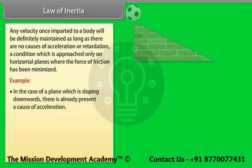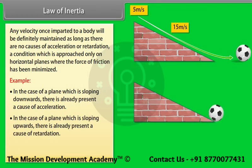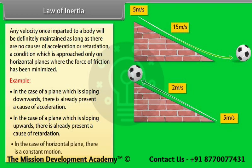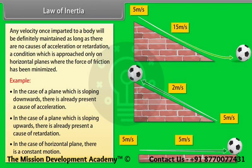In the case of a plane sloping downwards, there is already present a cause of acceleration. In the case of a plane sloping upwards, there is already present a cause of retardation. In the case of a horizontal plane, there is constant motion.